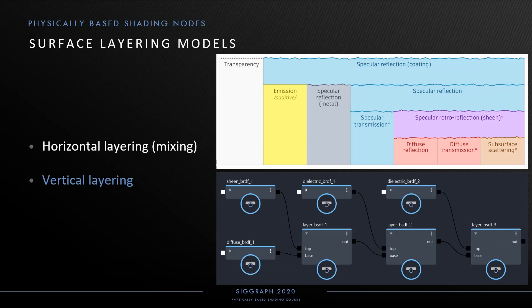In vertical layering, the BSDFs are placed on top of each other, describing a coating over a substrate. The light that is not reflected by the top layer is transmitted down to the layer below. The substrate can be a transmissive BSDF to transmit light further through the surface, or a reflective BSDF to reflect some light back up through the coating. To describe vertical layering, we introduce a layer node that connects the top and base BSDFs, outputting the new layered BSDF. These nodes can be nested to describe many vertical layers.